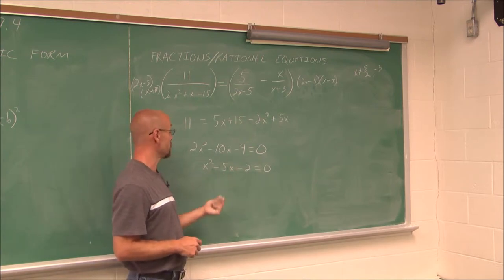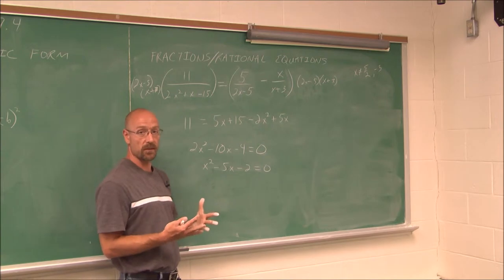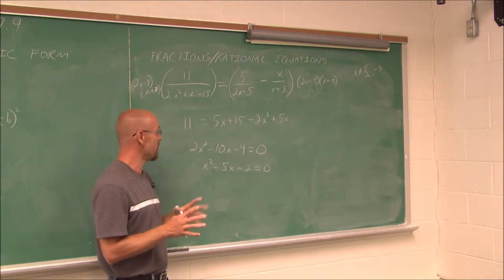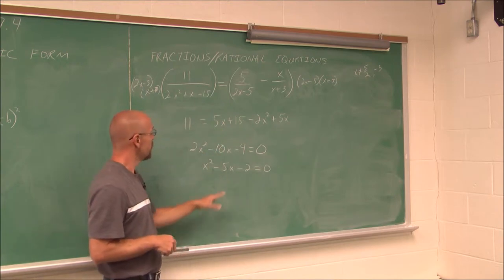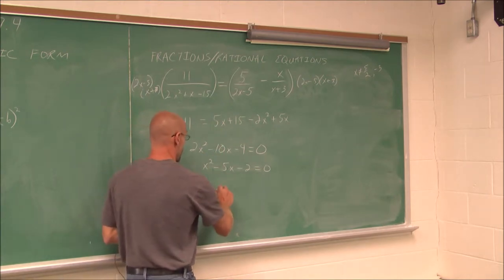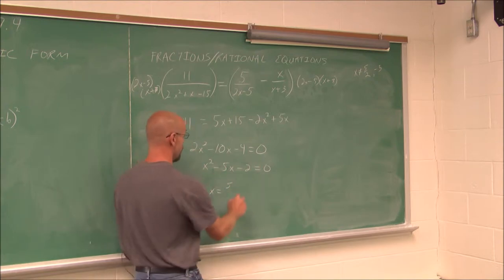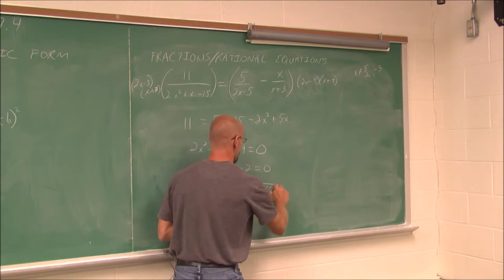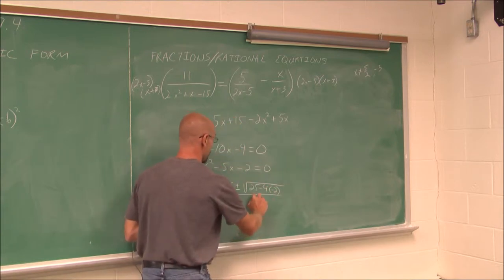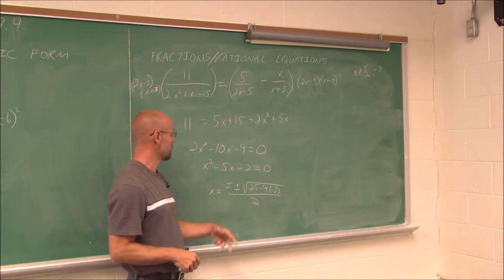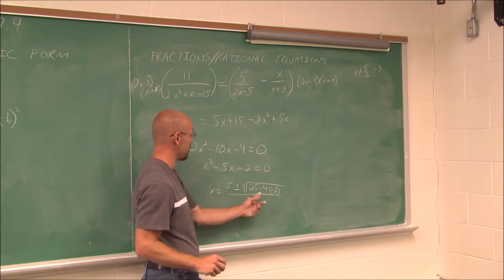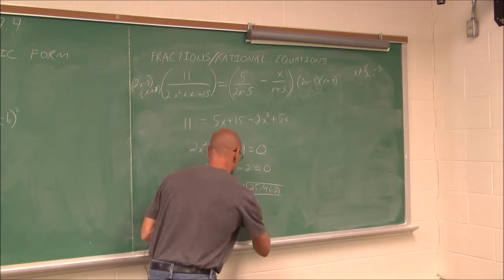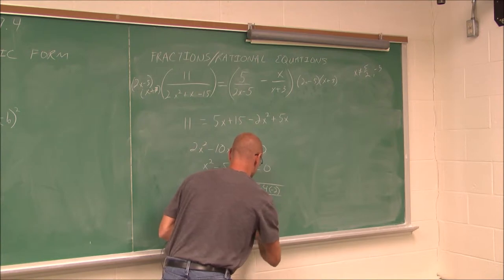The square root method won't work either since I can't isolate a squared value. Completing the square would work, but the middle term is odd, giving a fraction of 5/2 — and I'd rather not reintroduce fractions. So I'll use the quadratic formula: x equals negative b, plus or minus the square root of b² minus 4ac, all over 2a. With b = −5, a = 1, c = −2: x = (5 ± √(25 + 8)) / 2, which is (5 ± √33) / 2.